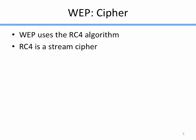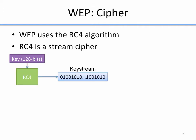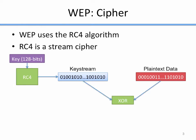The first thing to talk about with WEP is the cipher that it uses. WEP uses the RC4 cipher, and RC4 is a stream cipher. The way a stream cipher works is you start with a key, pass it through the stream cipher RC4, and it gives you a keystream, which is a pseudo-random string of bits. We take that pseudo-random string and combine it with the plaintext using exclusive OR to get ciphertext. That's a stream cipher.